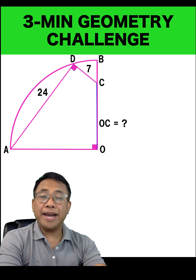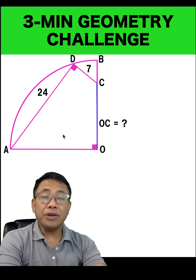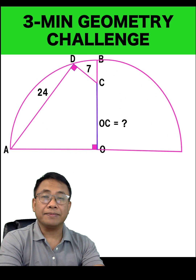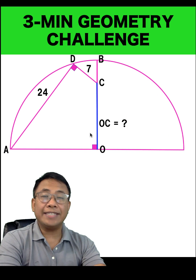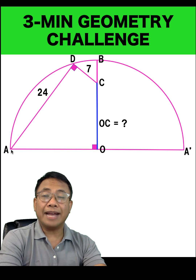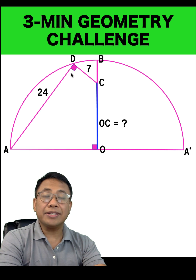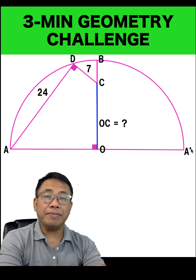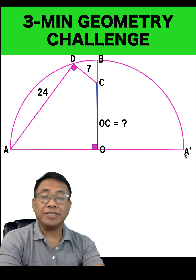Let's begin by reflecting this quarter circle to the right side. Look closely as I reflect this quarter circle. Since the right quarter circle is a reflection of the left quarter circle, let's label this point as A'. Notice that angle ADC is an inscribed angle and at the same time a right angle. This implies that the arc intercepted by this right angle must be a 180-degree arc, which means that segment AA' must be a diameter of circle O.